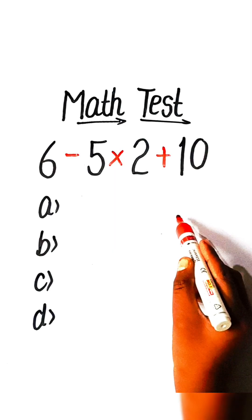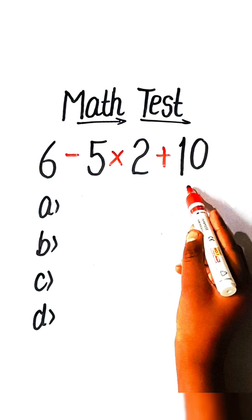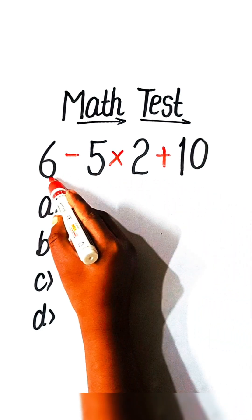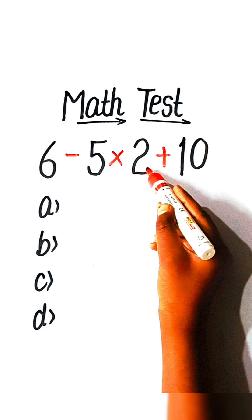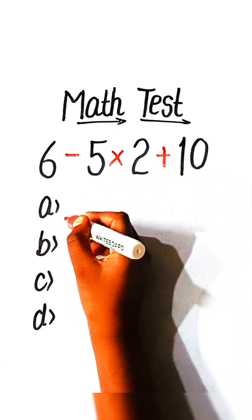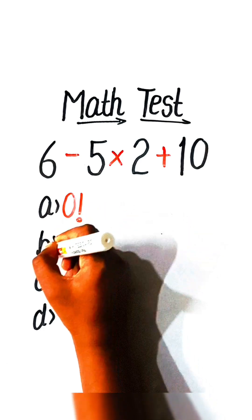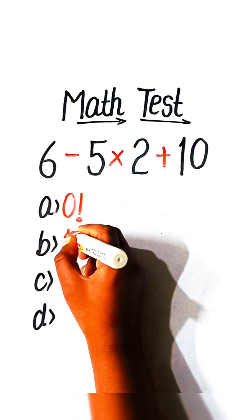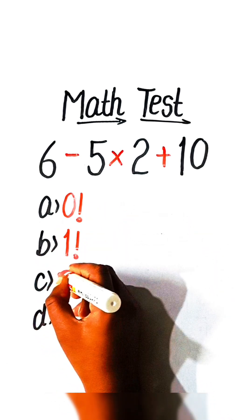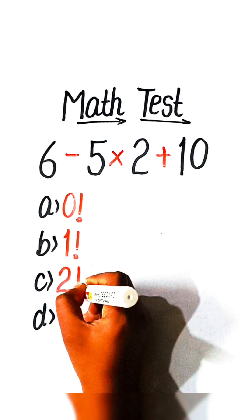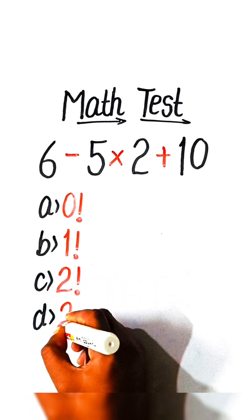Hello everyone. In this video we will solve this basic math equation: 6 minus 5 multiplied by 2 plus 10 equals to what? Option A: 0 factorial, Option B: 1 factorial, Option C: 2 factorial, or Option D: 3 factorial.